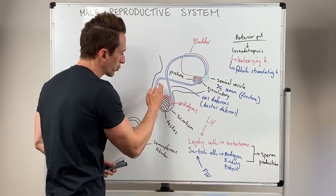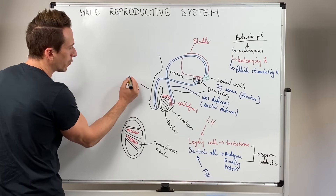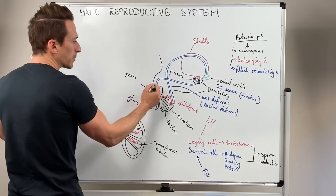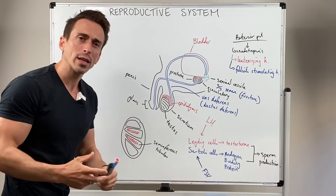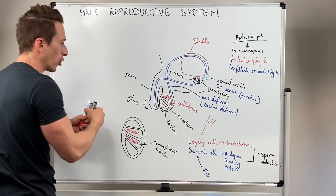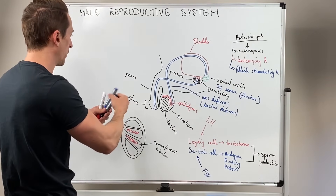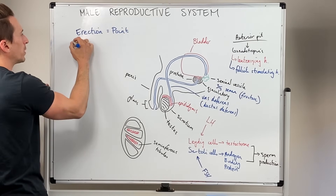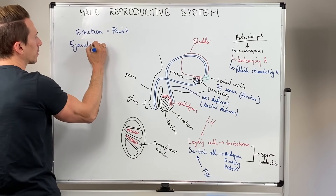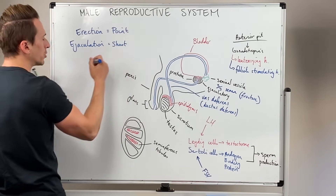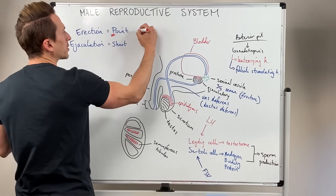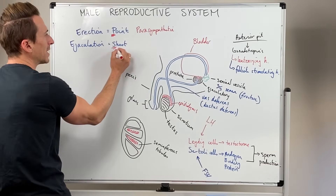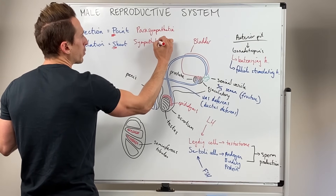From the prostate, the urethra travels through the penis. The penis is made up of spongiform tissue, and at the very end is what's called the glans penis. Erection and ejaculation need to occur to eject sperm into the vagina. To remember this: think 'point and shoot' — P for erection is the parasympathetic nervous system, and S for ejaculation is the sympathetic nervous system.